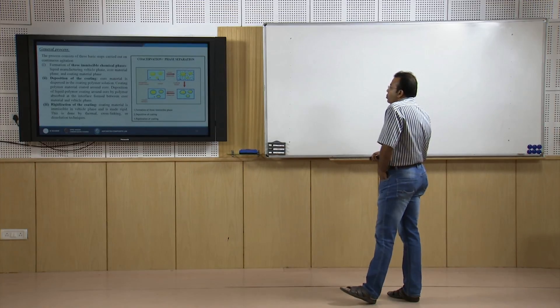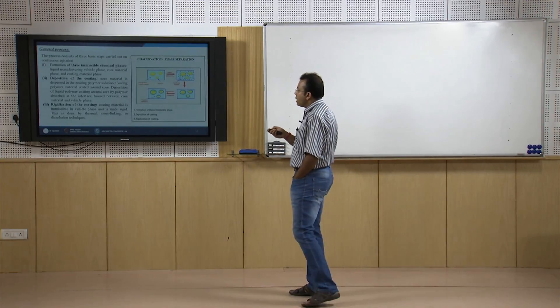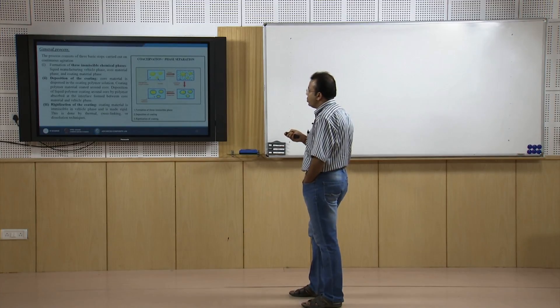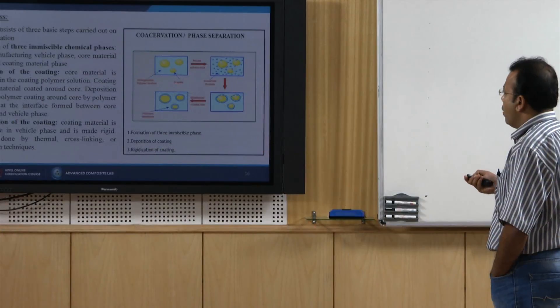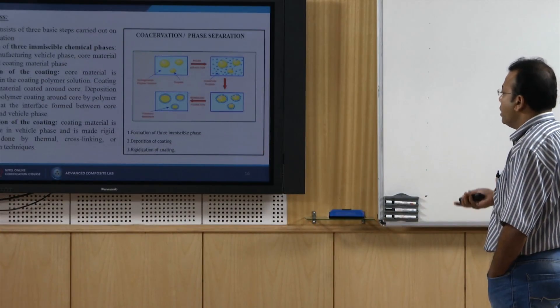The coacervation process consists of three basic steps carried out under continuous agitation. First, formation of three immiscible chemical phases: liquid manufacturing vehicle phase, core materials phase, and coating material phase. Second, deposition of the coating: core material is dispersed in the coating polymer solution, and liquid polymer coating deposits around the core by polymer adsorbing at the interface. Third, rigidification of the coating: the coating material is made rigid by thermal cross-linking or dissolution techniques.